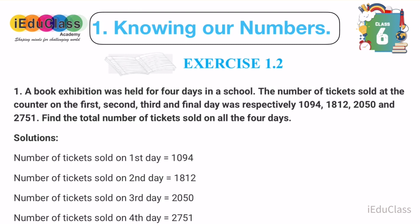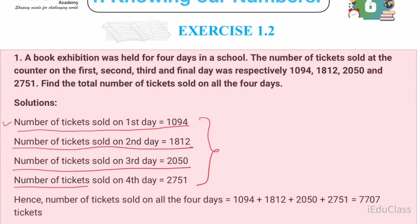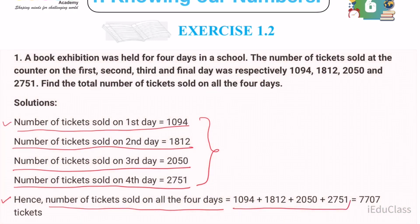Solution: Number of tickets sold on first day equals 1094, second day equals 1812, third day equals 2050, fourth day equals 2751. Hence, number of tickets sold on all four days is 1094 plus 1812 plus 2050 plus 2751 equals 7707 tickets.